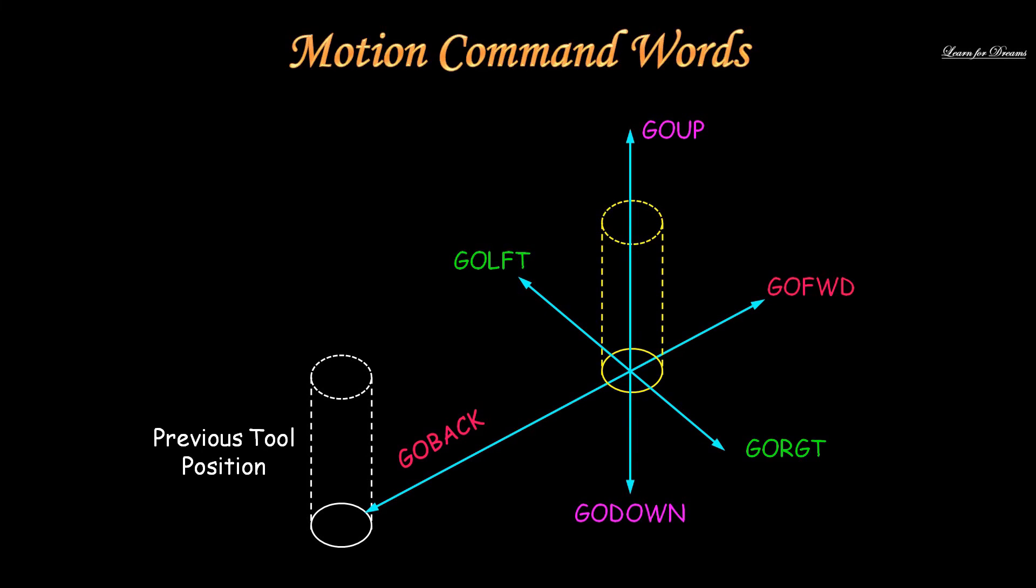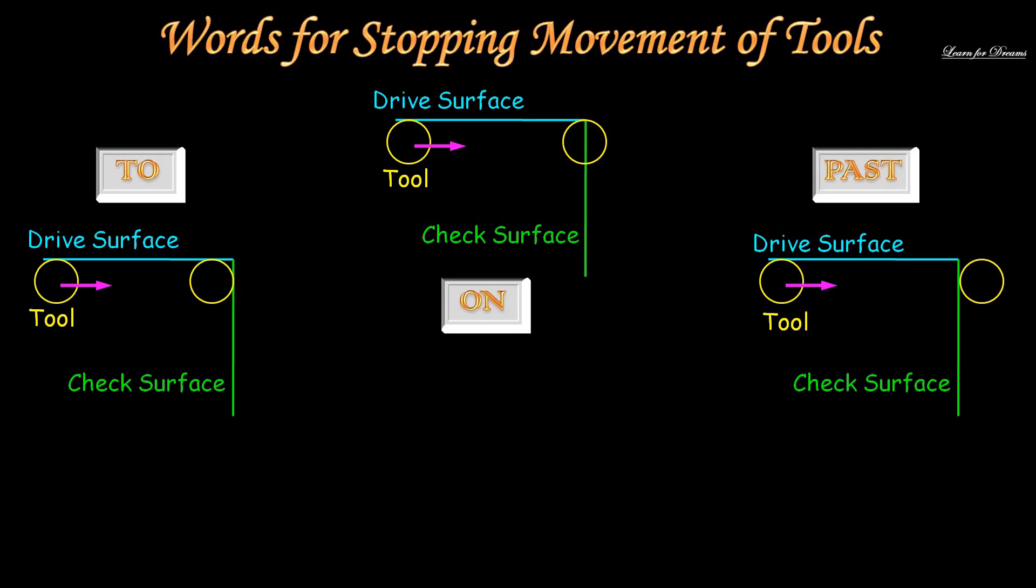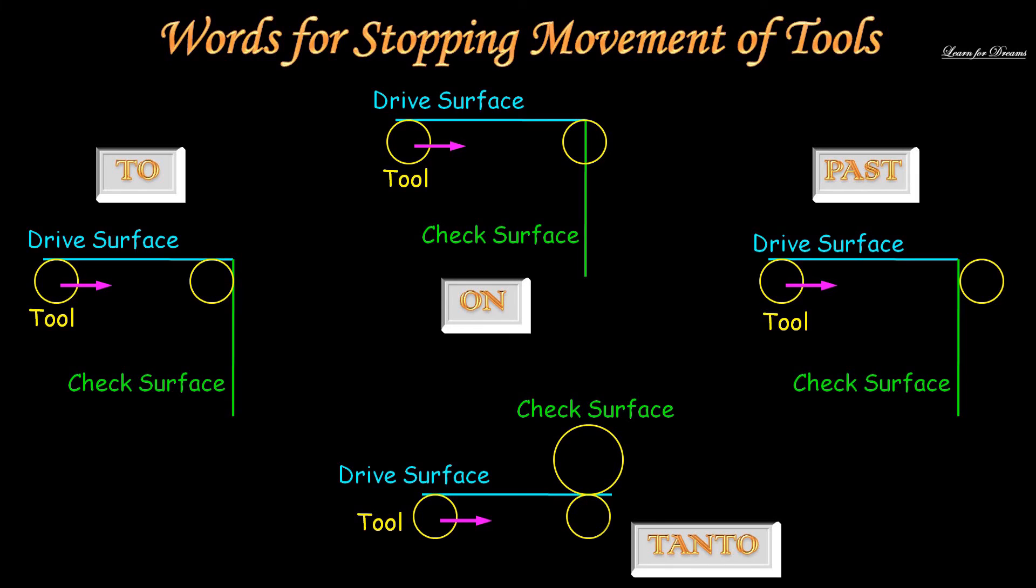Let's see words used for stopping movement of a tool. When you want to stop the tool at this position, you will use word ON. When you want to stop the tool here, then you will use word PAST. And when you are stopping tool at this position, you will use word TANTO because it is tangent to the other surface.